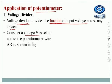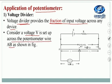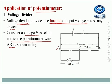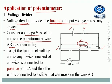Consider a voltage V set up across the potentiometer wire AB as shown in the figure. This is the potentiometer wire AB across which a voltage V is set up by connecting a cell having EMF E and resistance R. To get a fraction of voltage across any device, one end of the device is connected to the positive point A.